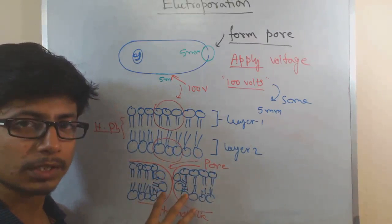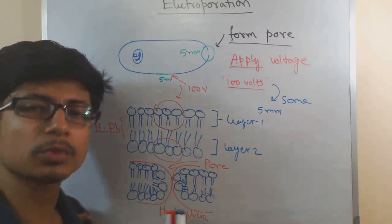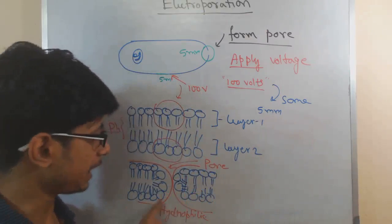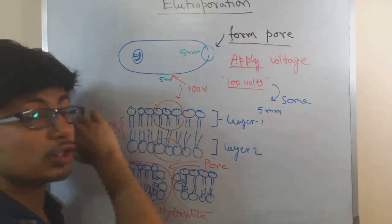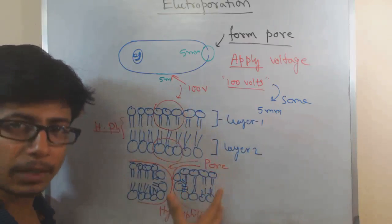So through this pore now particles can enter. That's how the whole process works: this voltage makes the phospholipid molecules rearrange in a way that creates that pore structure like this, and then molecules can pass through. I have drawn this picture in this cross-section way.